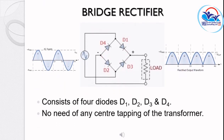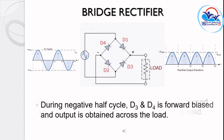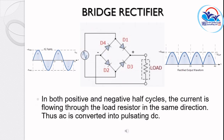The full-wave bridge rectifier circuit uses four diodes. During the positive half-cycle, diodes D1 and D2 are forward biased and conduct, allowing current through the load. During the negative half-cycle, diodes D3 and D4 are forward biased and conduct through the load resistor. In both positive and negative half-cycles, the output current flows in the same direction, converting AC to DC.